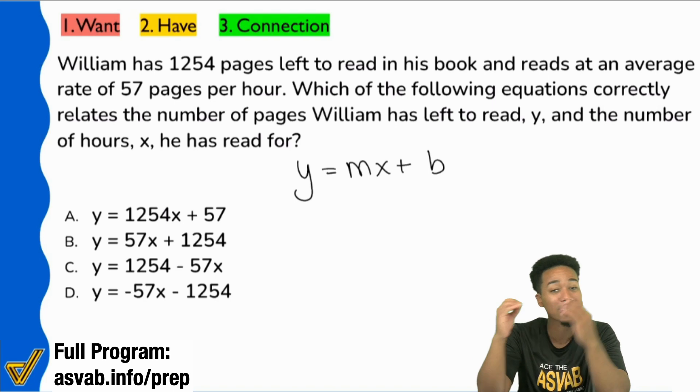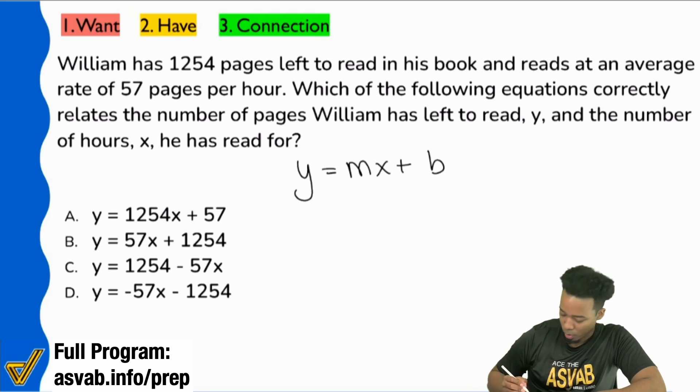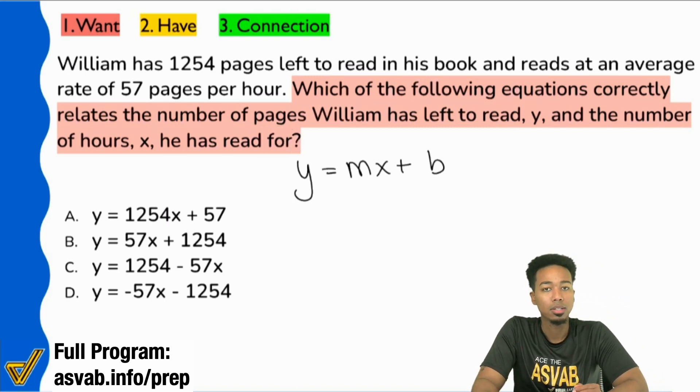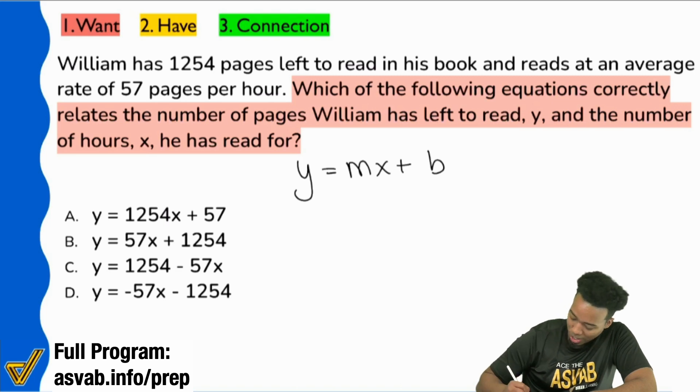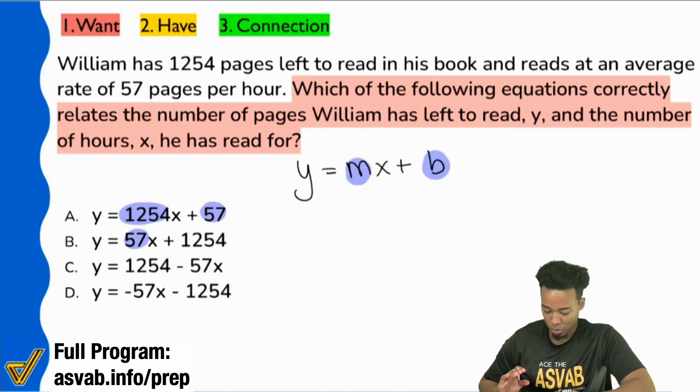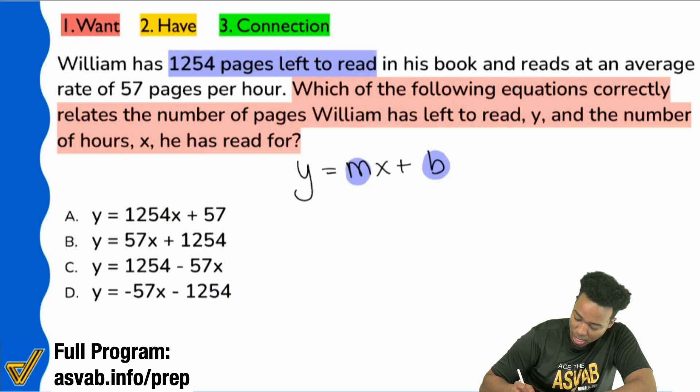So you see the relationship there? Again, what you notice in the words and what you can write down, very important to establish that connection because without the connection, we're all sad lost puppies and we don't really want to be there. So here we go. We have y equals mx plus b. Let's understand the point of the question. The question is, hey, which of the following equations correctly relates the number of pages William has left to read y and the number of hours x he has read for? So they're basically telling you, hey, x means how long William was reading. Y is the result, how many pages he has left after all has been said and done. So what we need to focus on then is finding out what our m and what our b are. That's all we care about.